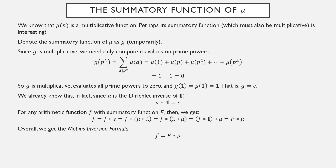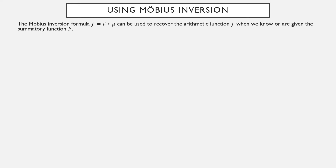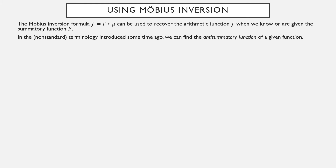This is called the Möbius inversion formula. From this we can see: if we know the summatory function capital F and perform a convolution with the Möbius function µ, we can recover the original function f — what I call the anti-summatory function. Note that 'anti-summatory function' is non-standard terminology you won't see in other places.